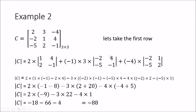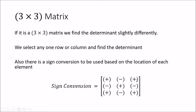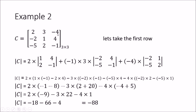Next, we go to the third value, which is minus 4. According to the sign convention, the sign at this location is plus. Therefore, minus 4 remains as minus 4. We then multiply by the determinant of the submatrix obtained by removing the first row and the third column, leaving us with minus 2, 1, minus 5, and 2. We find the determinant of those four terms.